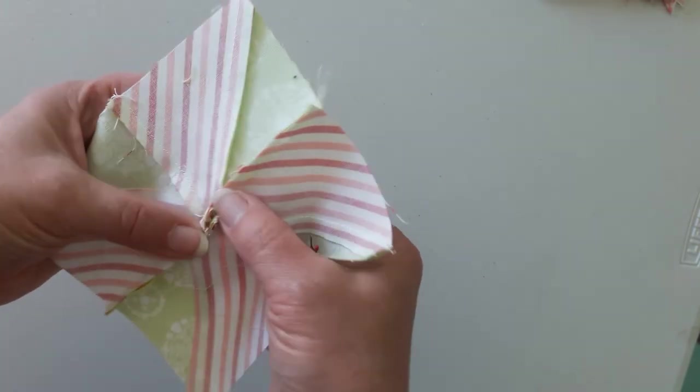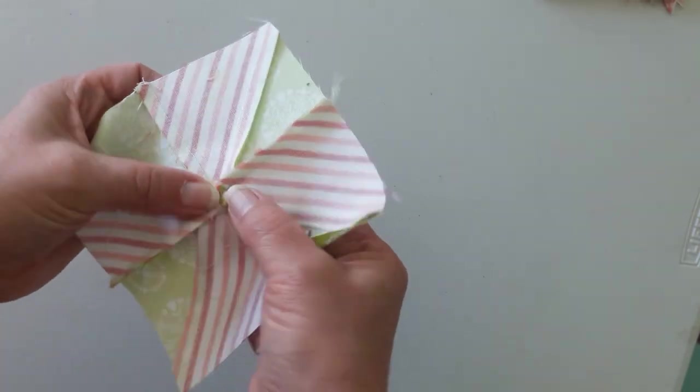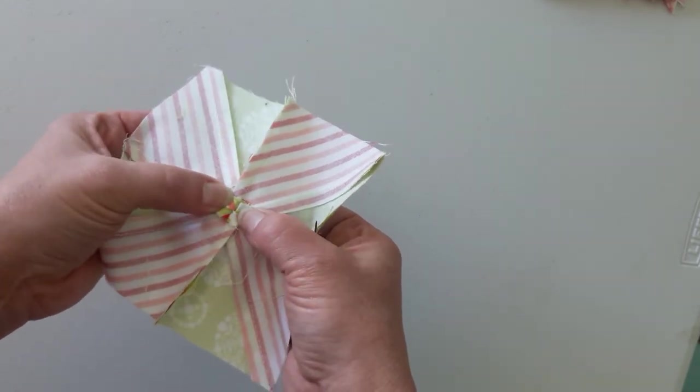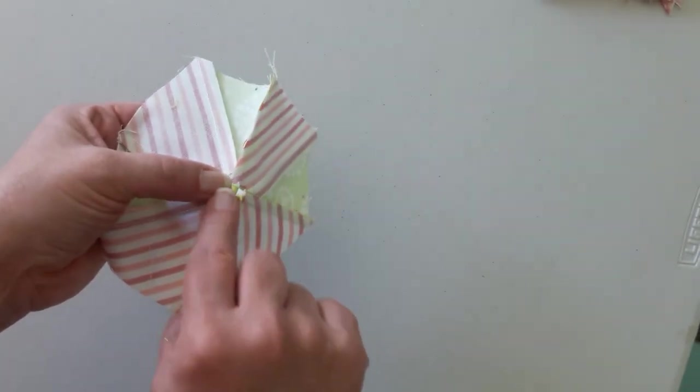And we're going to open up our block. Where we've popped those stitches, see how this opens up? That spins our seam around.